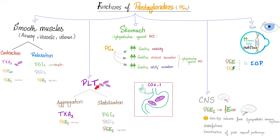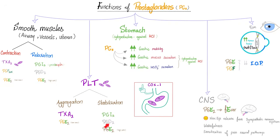Functions of prostaglandins on platelets: some cause platelet aggregation, others prevent platelet aggregation. Platelet aggregators are thromboxane A2 and prostaglandin E2 at low concentration — at low concentration you want to increase platelet aggregation and vasoconstrict, making it easier for the platelets to aggregate while minimizing blood loss. The anti-aggregators are prostaglandin I2 (prostacyclin, which keeps the blood cycling), prostaglandin D2, and prostaglandin E2 at high concentration. So the same prostaglandins that help the vessel relax are the same ones that help the platelets not aggregate.